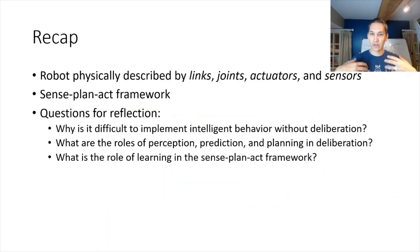Okay, so as a recap, we can describe all sorts of robots using links, joints, actuators, and sensors. They describe the body of the robot, and in terms of implementing the mind, the cognitive aspect of the robot, we've looked at the Sense Plan Act framework and different ways of implementing that internal planning component. Some questions for you to reflect on. Why is it difficult to implement intelligence without deliberation? What are the different roles of perception, prediction, and planning inside this deliberation? And also, what are the different types of roles that learning can play in this Sense Plan Act framework? I'll see you next time.